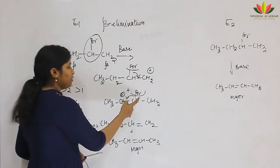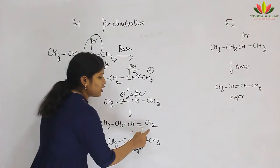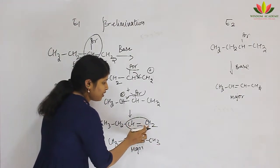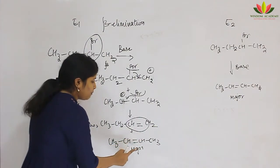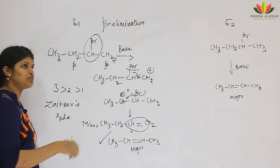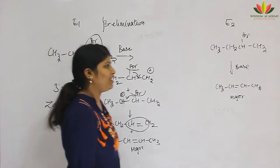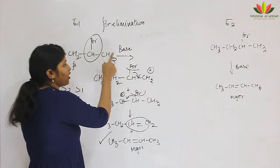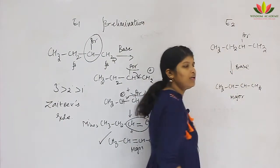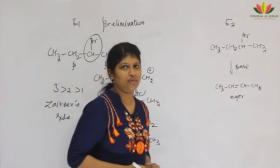This rule for E1 is called Zaitsev's rule. According to Zaitsev's rule, elimination gives the highly substituted alkene as the major product. The olefinic carbon in the major product has more substitutions compared to the minor product. In E2, the abstraction of the proton and removal of the halogen take place in a single step — similar to SN2 being one step. E2 directly forms the product and gives more or less only one product. E1 is also called beta elimination reaction because the beta proton is removed.